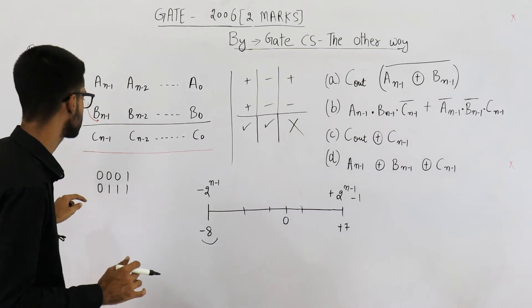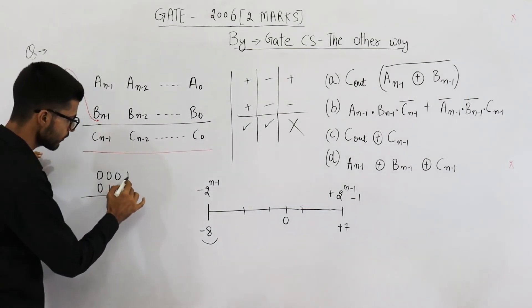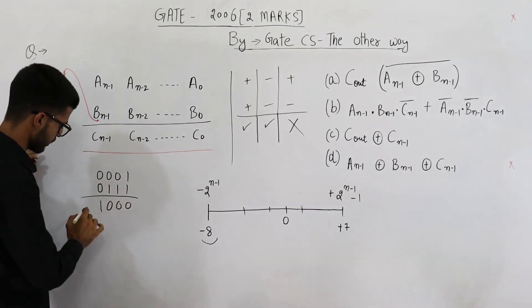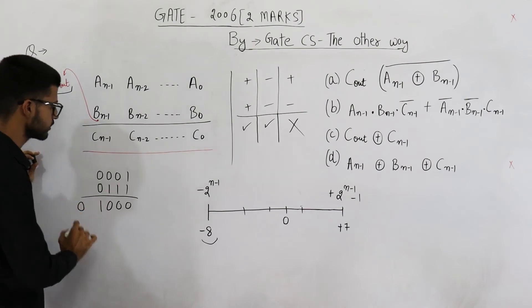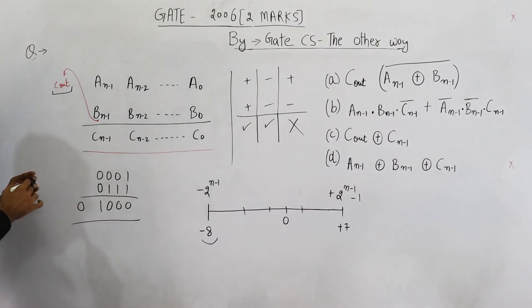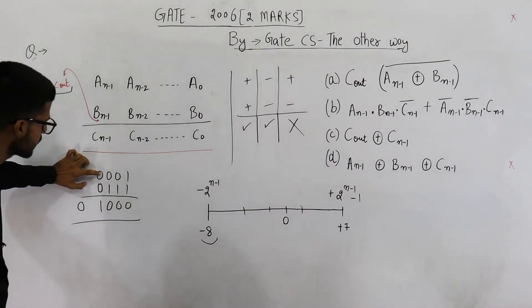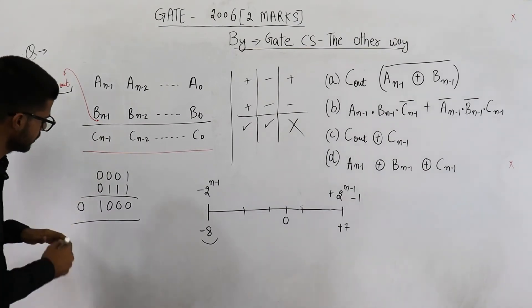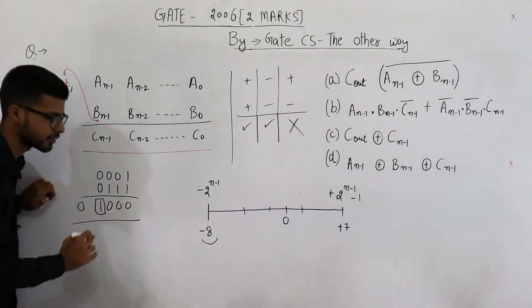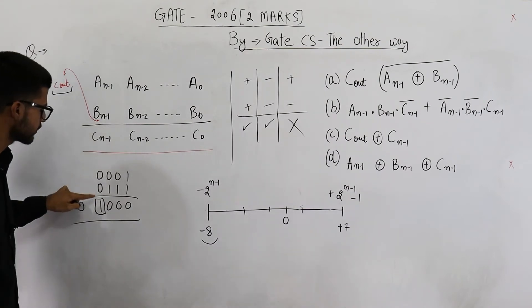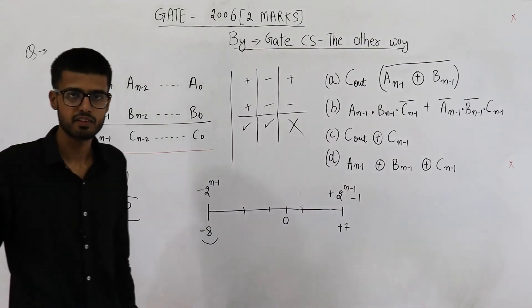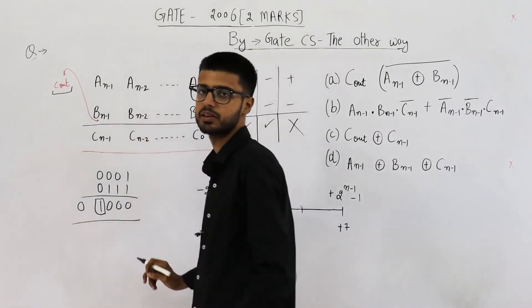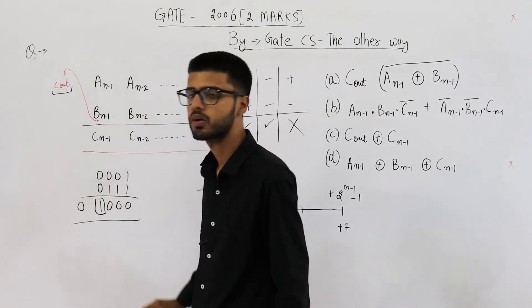Now, 1 plus 1 is 0, 1 plus 1 is 0, 1 plus 1 is 0, 1 plus 0 is 1, and the final carry will be 0. You can see the most significant bit of the first number is 0 — that means it is positive. The second number is also positive. But the result you are getting is negative. Positive plus positive giving negative is never possible, which implies there is overflow. The result is actually of 5 bits — the carry out is the sign bit.